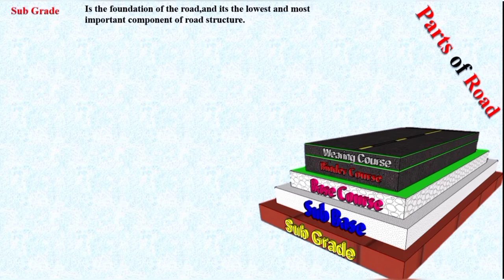Remember: if the natural surface level is above the formation level, then the surface is cut down to form the subgrade surface. If the natural surface level is below the formation level, then the subgrade will be above the ground level. Also remember, the material of the subgrade should be strong enough to bear all the load acting on it, and the material should be easily accessible, available in the vicinity, and cheap.